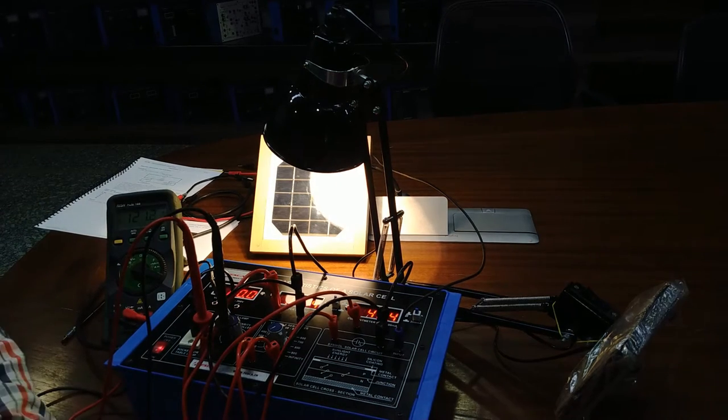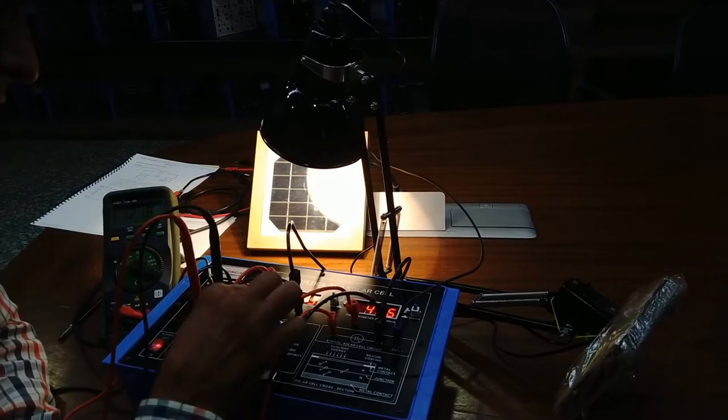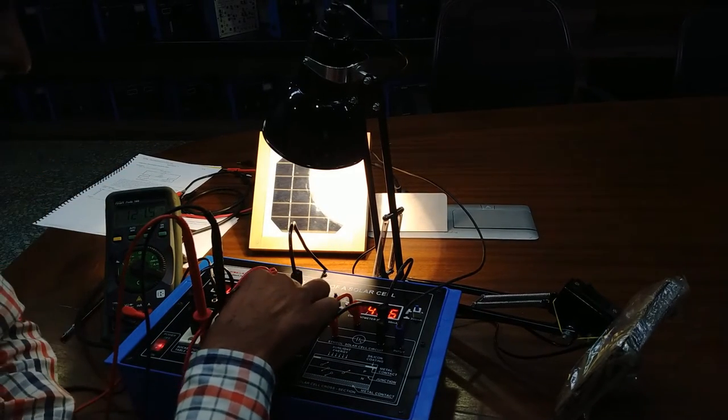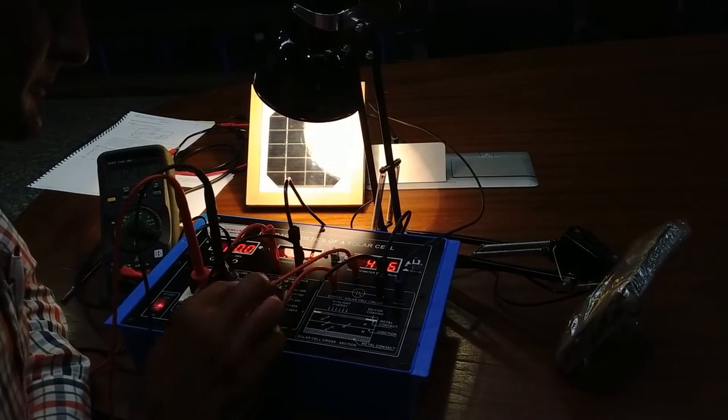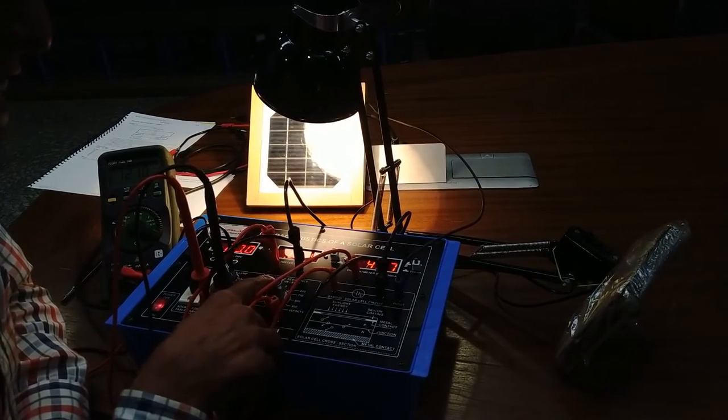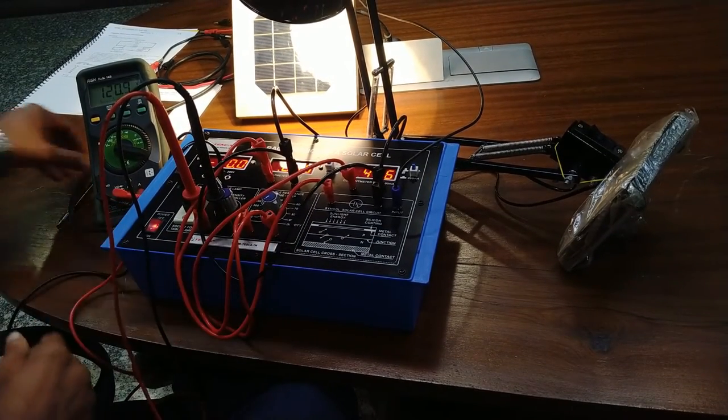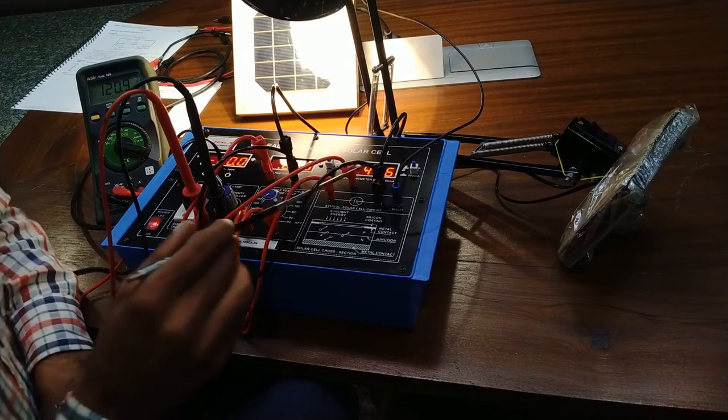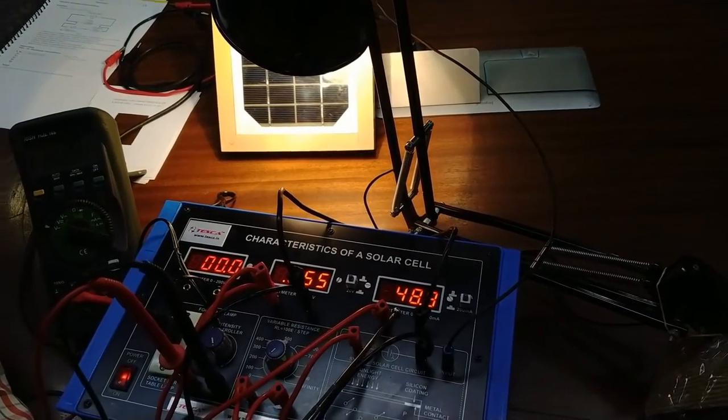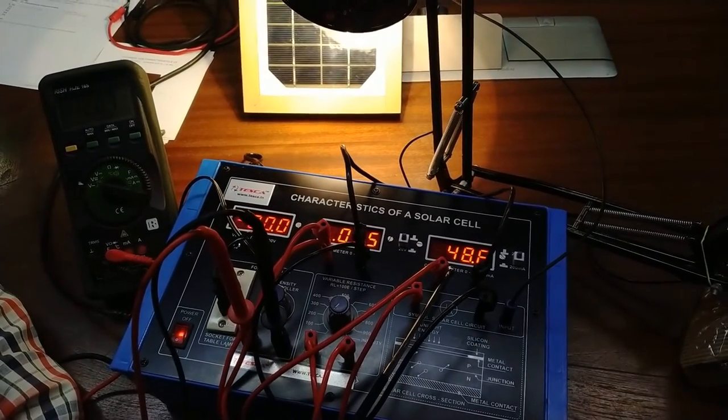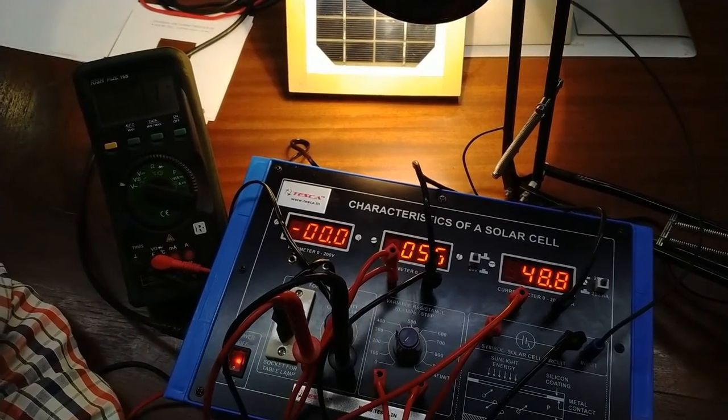For second experiment, we have to use the variable resistance. At zero position, we can note the short circuit voltage and current. We can see on the display. There right now, ampere is 48. Voltage is 0V. This is our short circuit voltage.